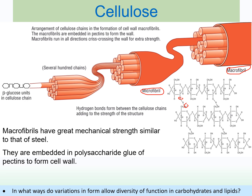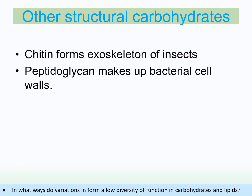The strength of cellulose is important for its role in the plant cell wall, giving structure and strength to plant cells. You also need to be aware of other structural polysaccharides: chitin, found in the exoskeletons of insects, and peptidoglycan, found in bacterial cell walls — both have high amounts of carbohydrate, hydrogen bonding, and glycosidic bonds contributing to their structural strength.